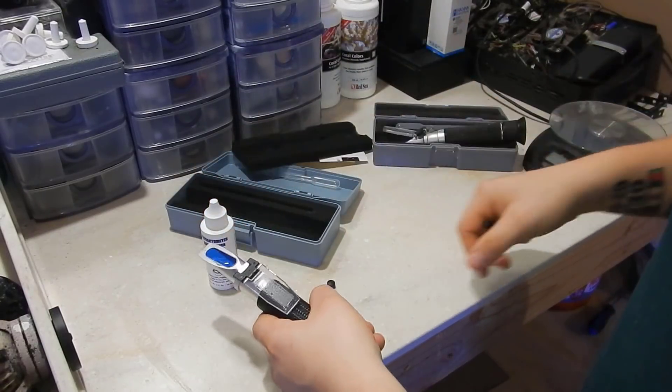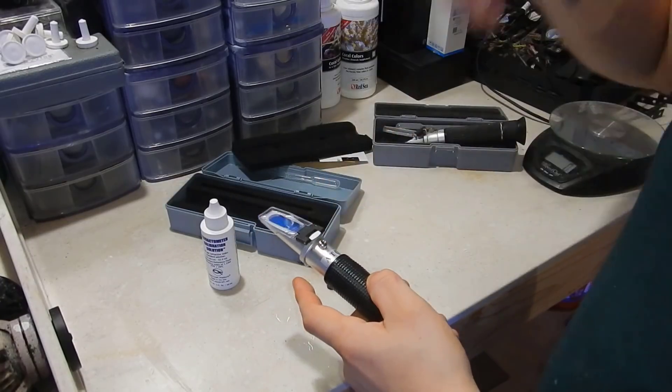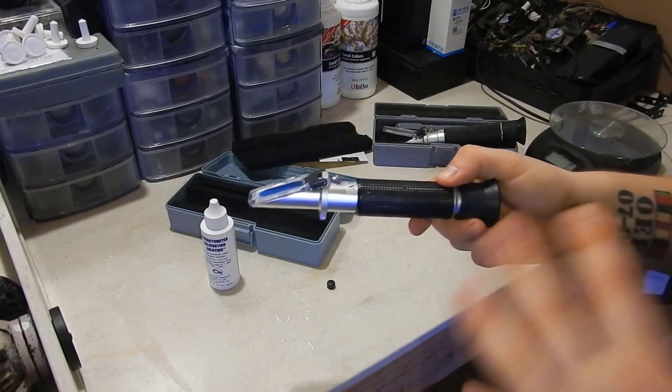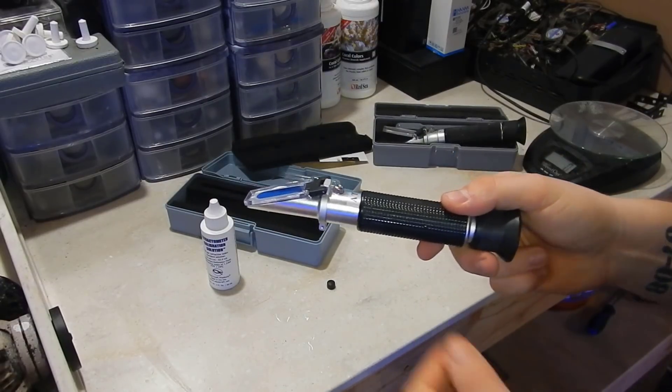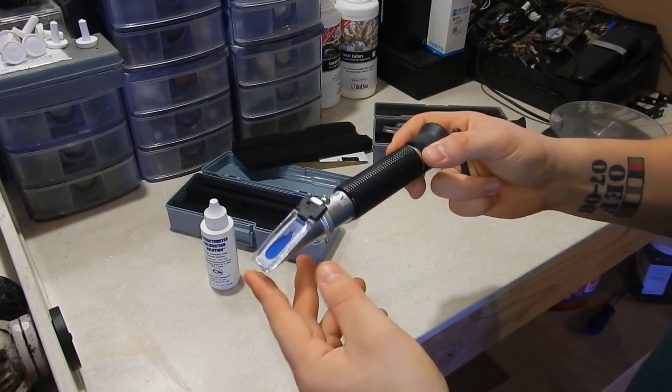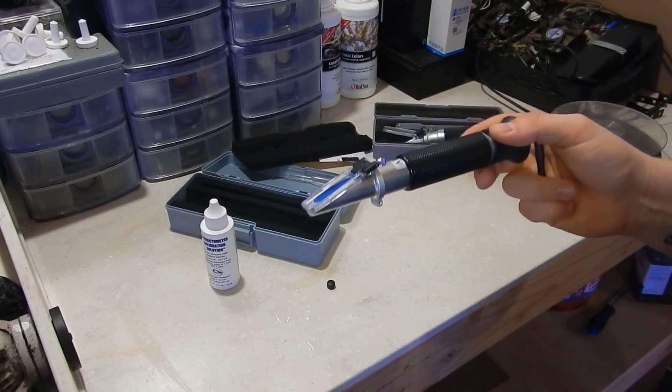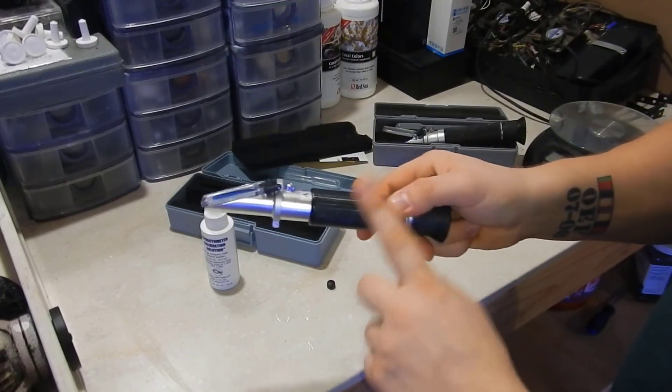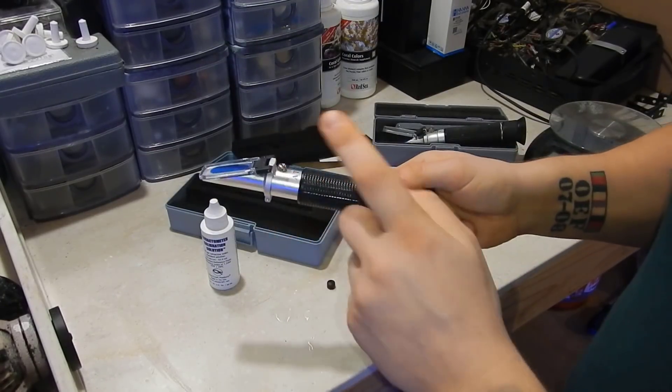Because I do know over time, they do kind of read a little off and it really does depend on the quality of the refractometer in the first place. So definitely do it every time for the first few times, and if it doesn't change then you know you're pretty good. Go to once a month, once every couple months. But it's important that you make sure that it's correct because if you're making adjustments on your tank based on an incorrect reading, you're just going to cause issues with your system.